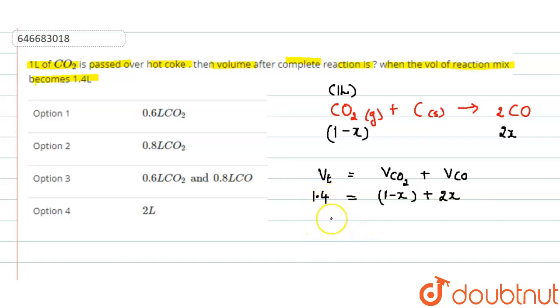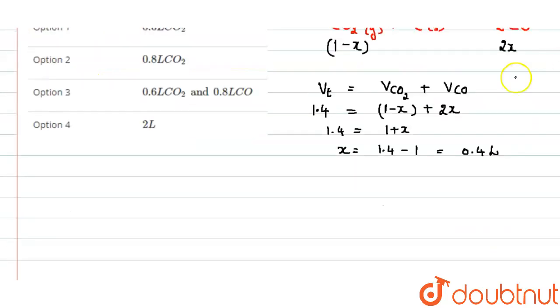On solving, we get that 1.4 is equal to 1 minus x plus 2x, that is 1 plus x. So x is equal to 1.4 minus 1 liter, that is 0.4 liter.